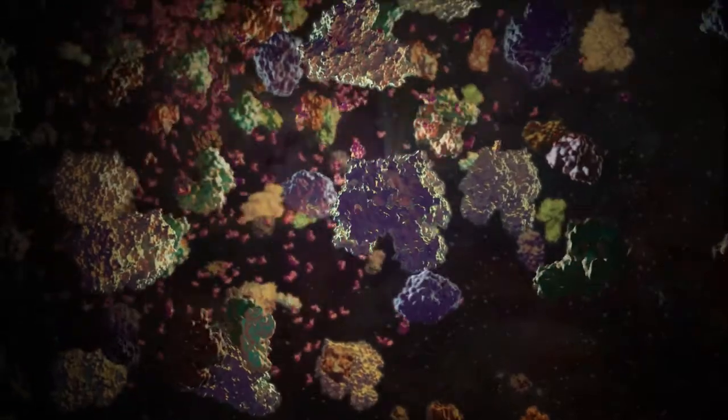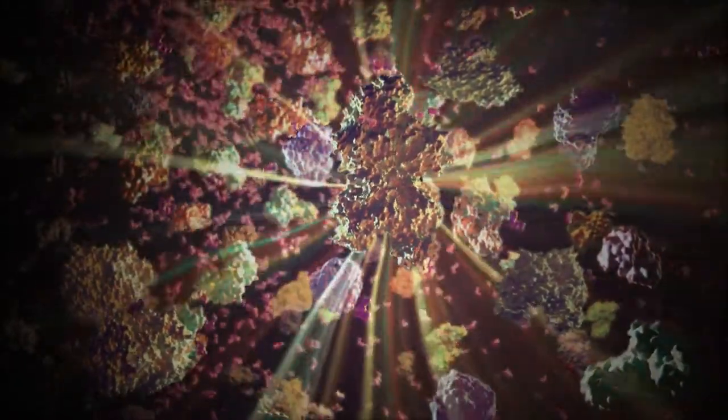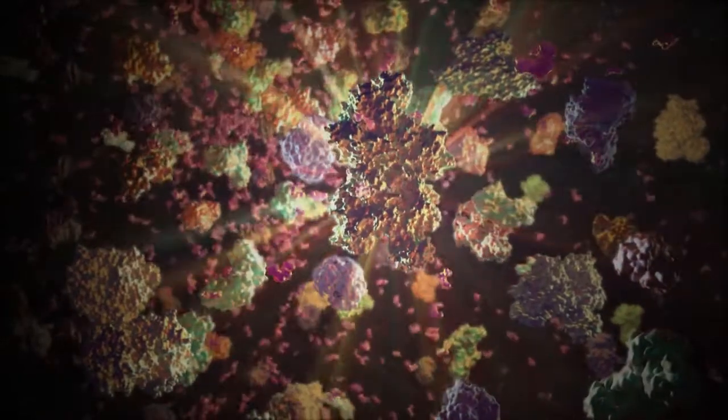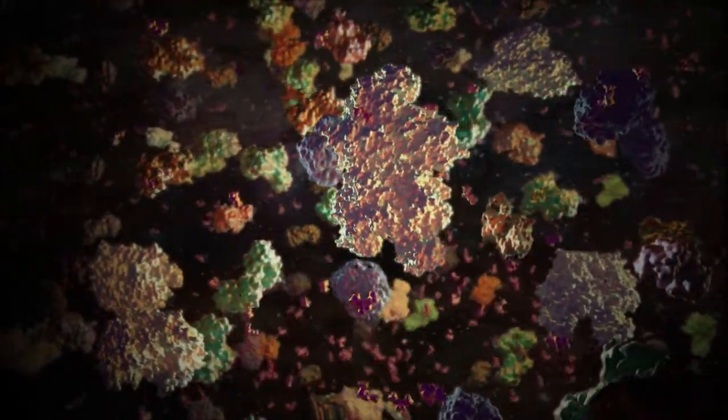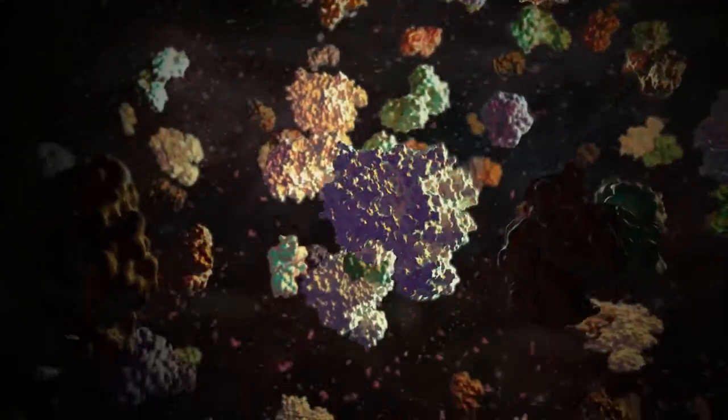This binding prompts an oscillation from the inactive dimeric form to the active tetramer. In this form, PKM2 activates the last step of glycolysis. When the concentration of FBP dissipates, PKM2 dissociates into a dimer.